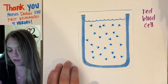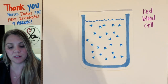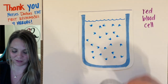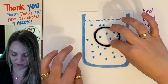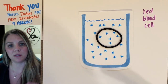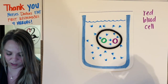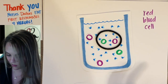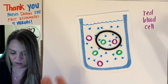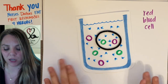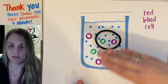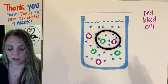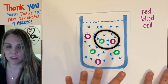Red blood cells can either swell or shrink depending on what kind of solution they are in. To show this, imagine my hair tie is a typical red blood cell. If the salt concentration inside and outside my red blood cell are the same, this would be isotonic — the concentration of solute inside and outside is equal, and water would flow back and forth evenly with nothing crazy happening.